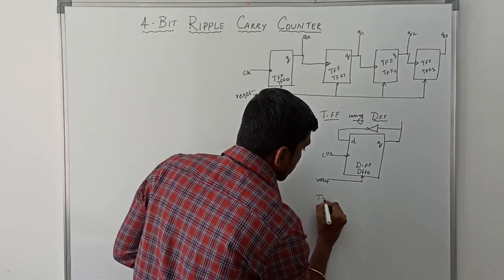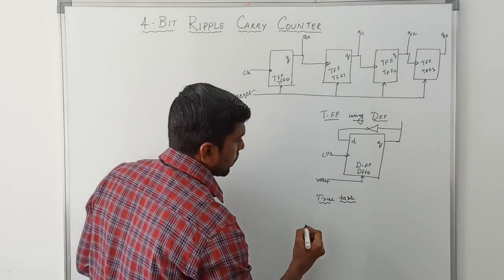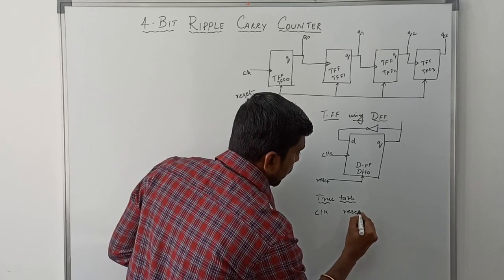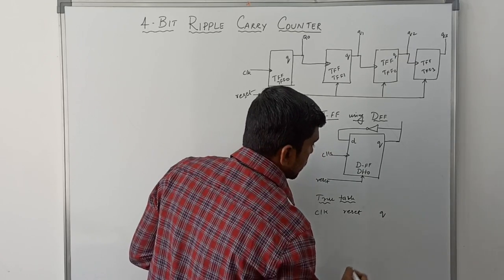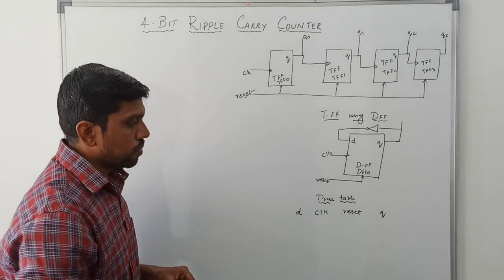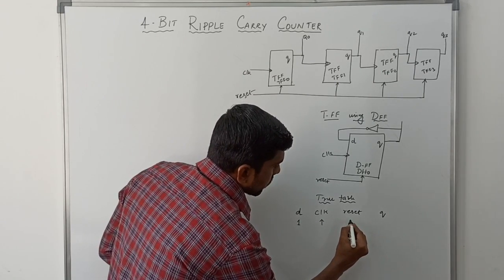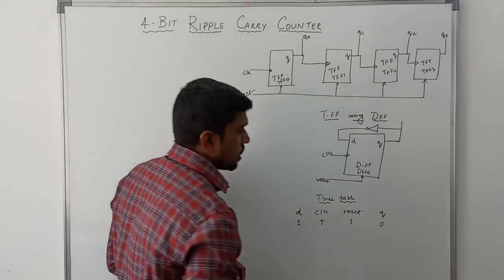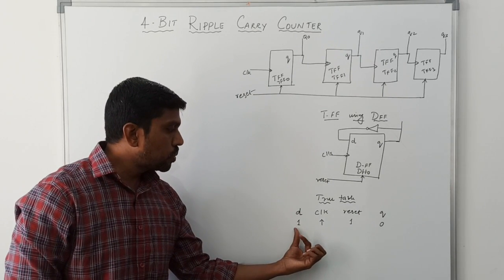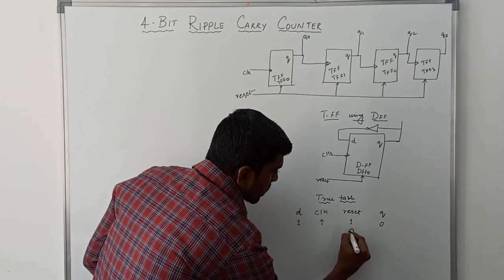Now I draw the truth table for the T flip-flop. The input signals are clock and reset, Q is the output value, and D is the data input value. When data value is 1, clock is high, and reset value is 1, the output is 0, because reset value equals 1. If any input goes to the D value on the clock signal, the output is 0.